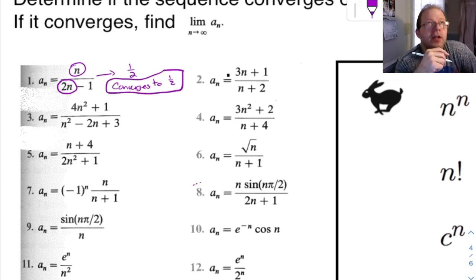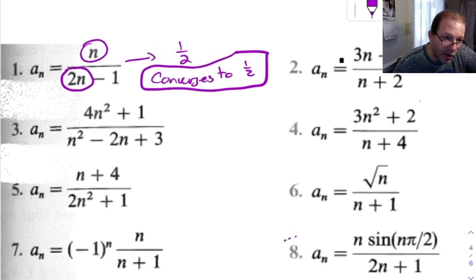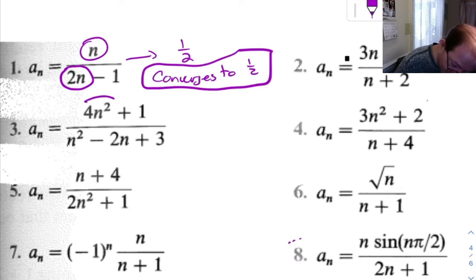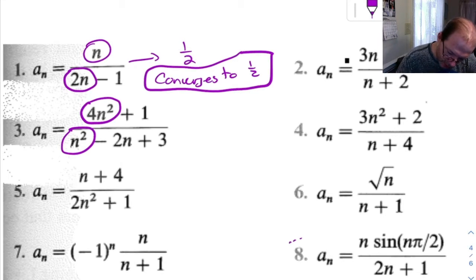Okay, the next one. We've got a polynomial here. On top, we've got a quadratic over a quadratic. So our dominant terms here are going to be this one on top and this one on bottom. When n goes to infinity, this is going to go to 4.